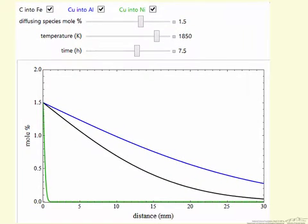So let's look at the full snapshot here. We're plotting mole percent versus distance, and the color coding corresponds to copper and aluminum, carbon and iron, and then copper and nickel.